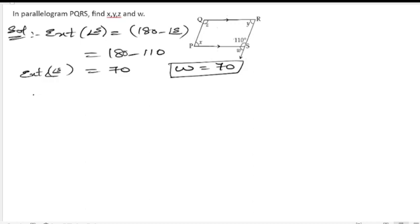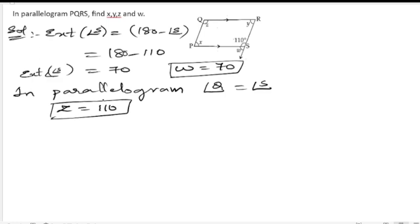Which is nothing but the w, so small w is equals to 70. Next we know that in a parallelogram opposite angles are equal. So let us write down, in parallelogram opposite angles are equal. Angle Q is equals to angle S. So what is this angle Q? Z is equals to angle S, which is 110. So we got z, z is equals to 110.